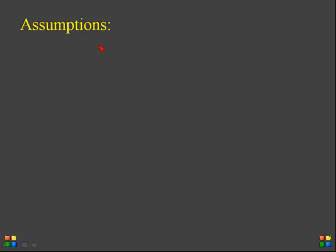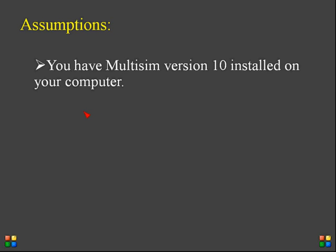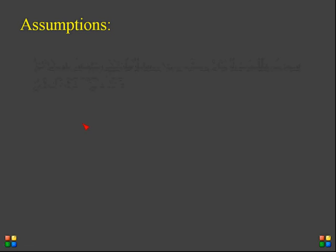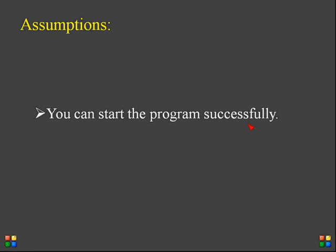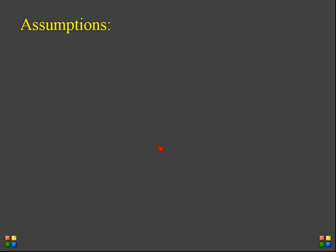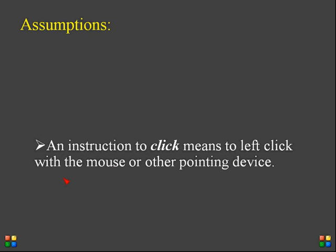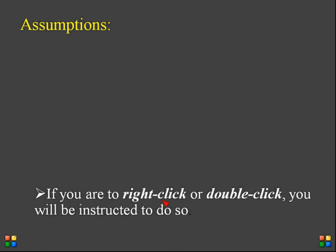Now, what are the assumptions we are making when we want to use Multisim software? The first assumption is to have Multisim version 10 installed on your computer. Second, you can start the program successfully. Third, whenever a click is mentioned, that means a left click with the mouse. Fourth, if a right click or double click is required, you will be instructed to do so.